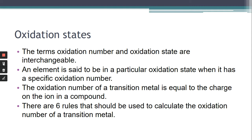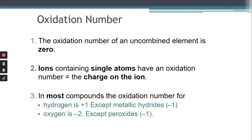The oxidation number of the transition metal is basically the charge that's on that transition metal when it's in the compound. An element is said to be in a particular oxidation state when it has a specific oxidation number — so if it's 2+ its oxidation state is two positive. To calculate the oxidation number of our transition metals there are six rules to consider. If the transition metal is on its own and not combined with any other element, the oxidation number is zero — so copper metal on its own has oxidation number zero. If I've got CuCl₂, there are two chloride ions attached to it, each with a charge of minus one, so the copper therefore has a two positive charge.